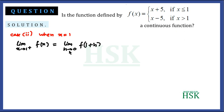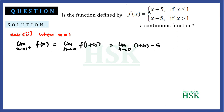The right hand limit is: limit as x → 1⁺ of f(x) = limit as h → 0 of f(1 + h) = limit as h → 0 of (1 + h - 5). Since 1 + h is greater than 1, f takes the value x - 5. Applying the limit gives 1 + 0 - 5 = -4.